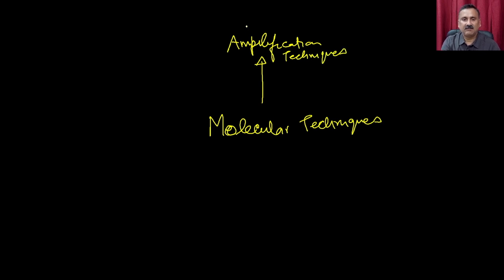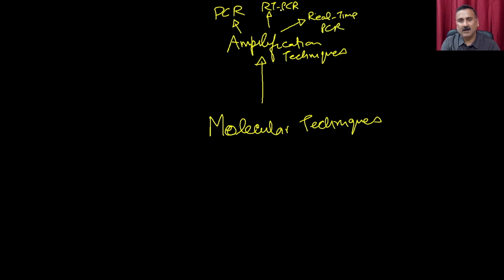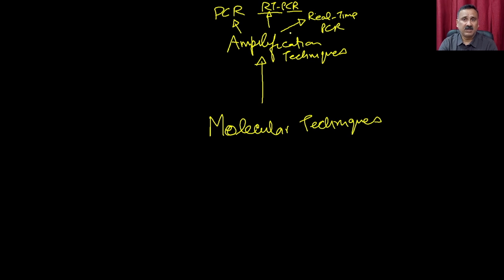Within amplification techniques, you can have different types such as polymerase chain reactions, real-time PCR, and RT-PCR or reverse transcriptase PCR. All of these amplification techniques have utility in amplifying a specific region of the genome so that you can get genome fragments. These fragments can be used for downstream cloning applications, which we are going to discuss in detail when we take up molecular cloning.